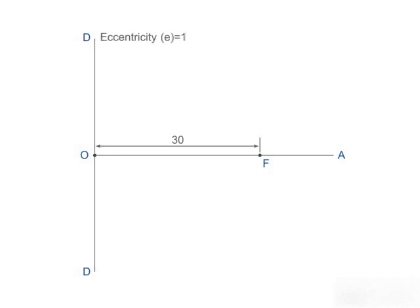For a parabola, the eccentricity is always equal to 1. So, we will bisect the line OF and mark the bisecting point as V. The point V lies on the parabola and is the vertex of the parabola.